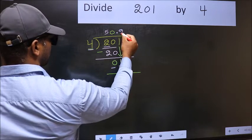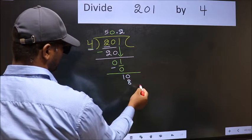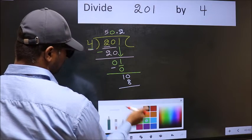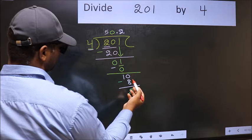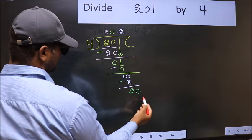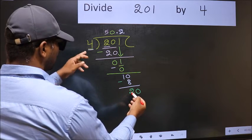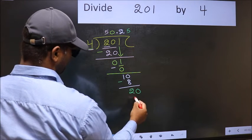Now you should subtract 10 minus 8, 2. Decimal is already there, so directly take 0. When do we get 20 in 4 table? 4 fives 20.